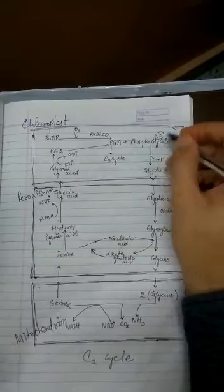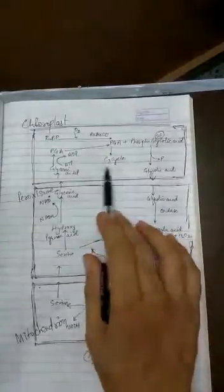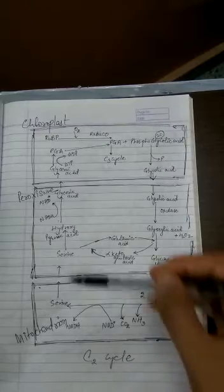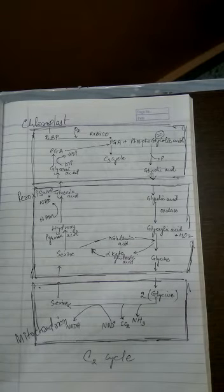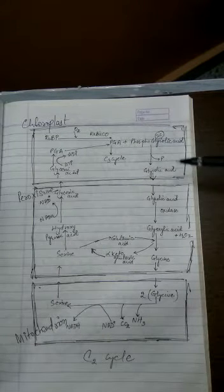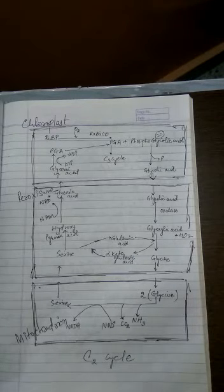Because this two-carbon compound is formed, the pathway is called the C2 cycle. The PGA will enter the C3 cycle, but there is a loss because phosphoglycolic acid undergoes the C2 cycle. This phosphoglycolic acid will lose its phosphate group and change into glycolic acid, which is then transported out of the chloroplast into the peroxisome.